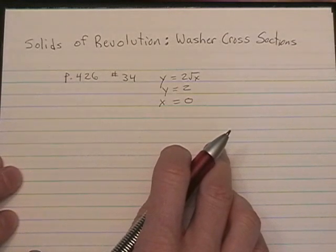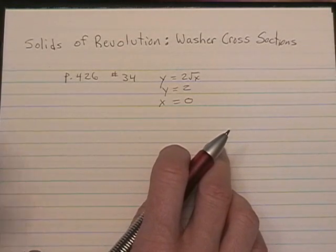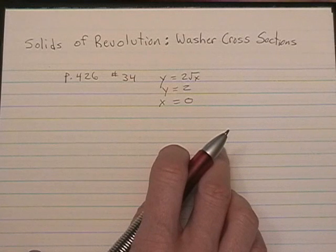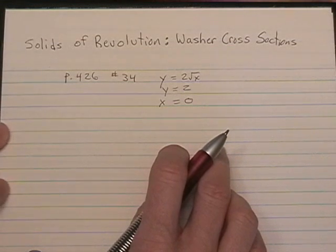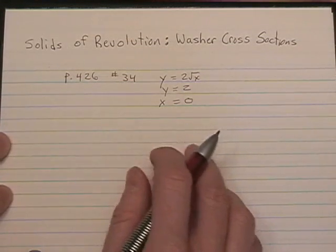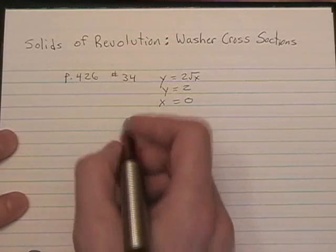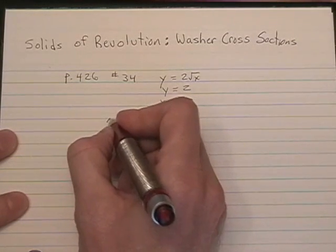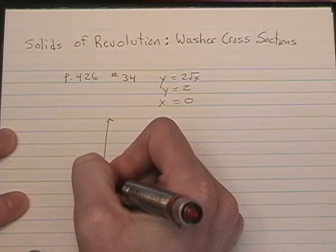Step one in solving the problem is to draw a region and sketch a line segment perpendicular to the axis of revolution. And so that sketch will look something like this. Make sure you include your x and y axis in your sketch.